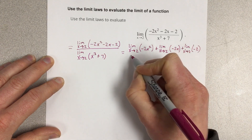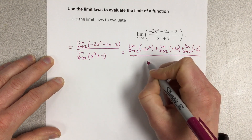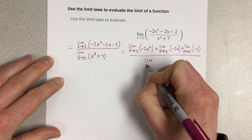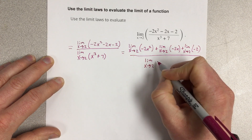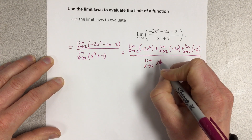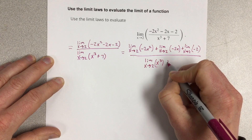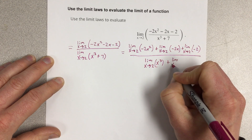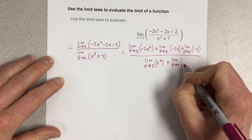And do the same thing on the bottom. We would have the limit as x approaches 2 for x cubed, plus the limit as x approaches 2 for 7.